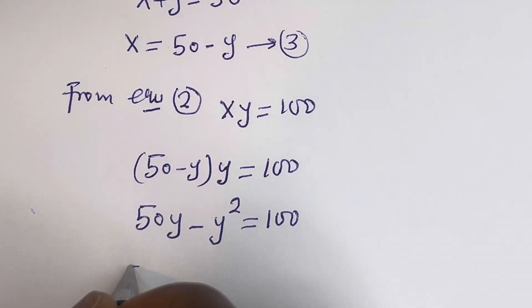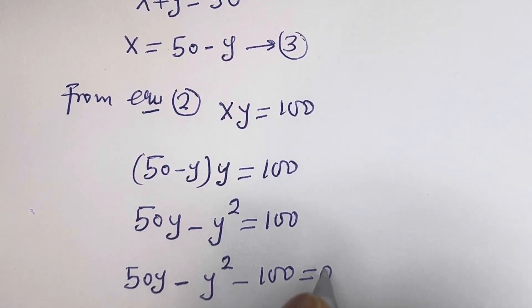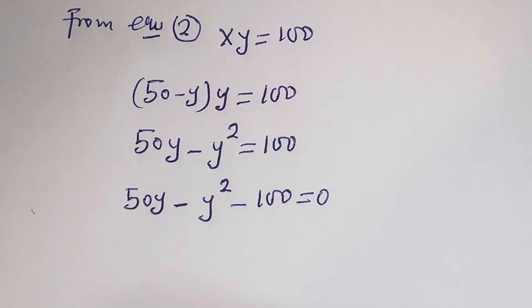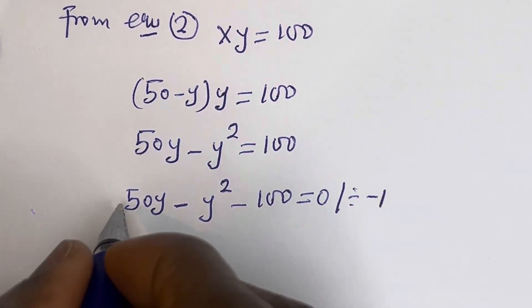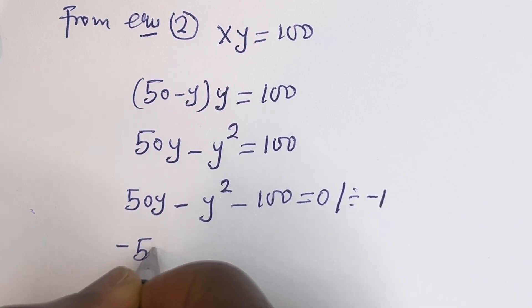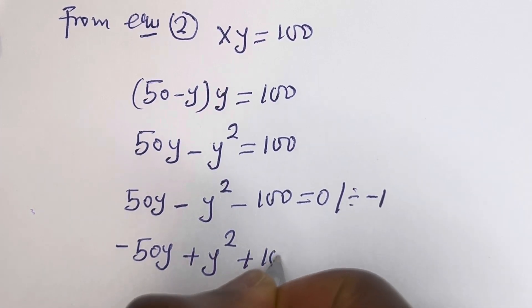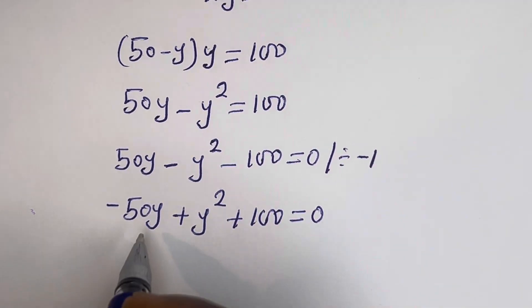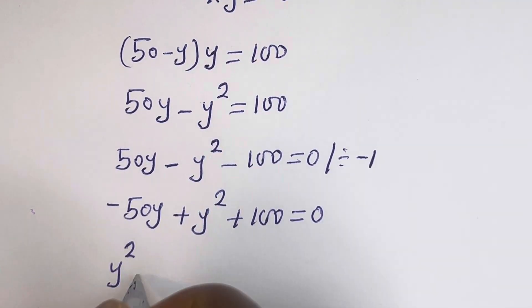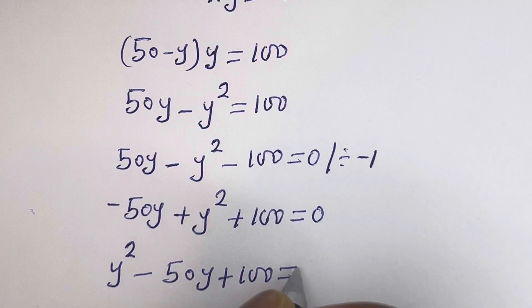Here we have 50y minus y squared minus 100 is equal to 0. Let's put this in standard form. We have y squared minus 50y plus 100 is equal to 0.